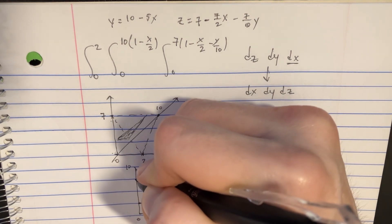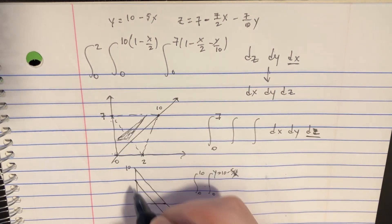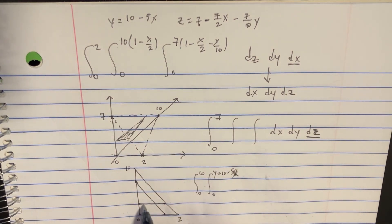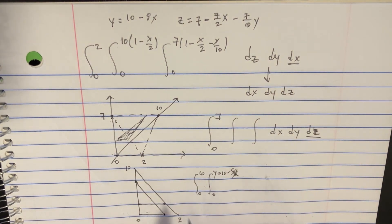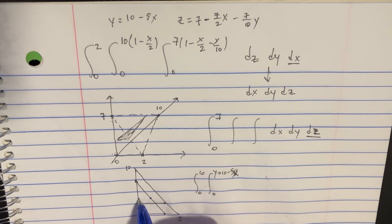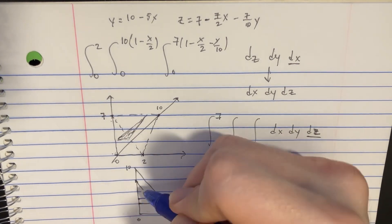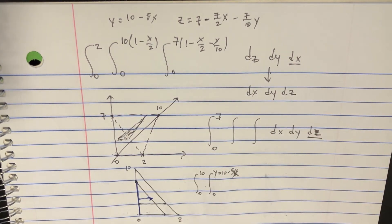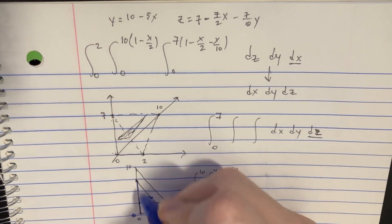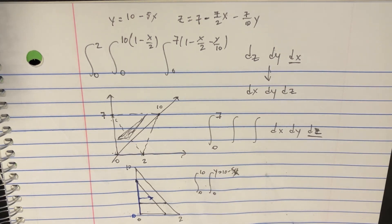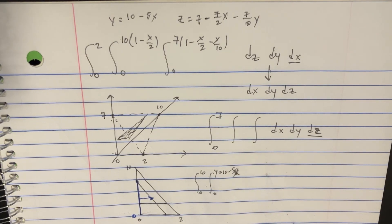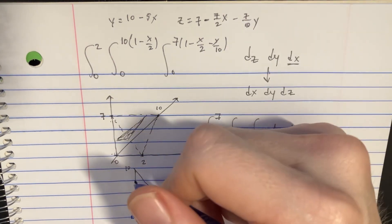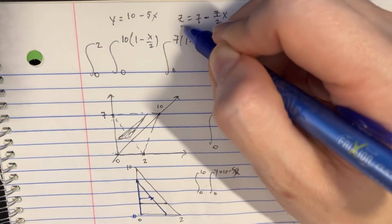But if we were to start going up, now we're going to get something that's going to start here and end over there. So now the integration is going to be more from here to there. And then we're still going to want to go all the way from 0 to whatever that point is. Not 10, but that point. And if we were to try to describe that point, there's only one other line that we can use.